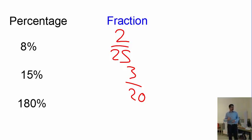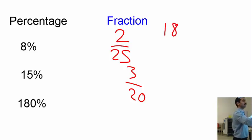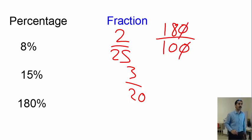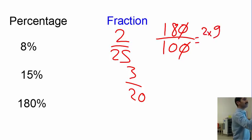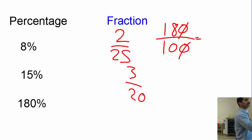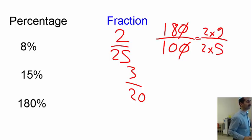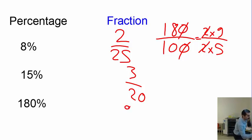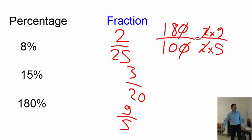Next: 180%. Write it as 180 over 100 — the zeros cancel. Then both are divisible by 2: 2 times 9 gives 18, and 2 times 5 gives 10. Cancel those and you end up with 9 over 5. That's how you turn a percentage into a fraction.